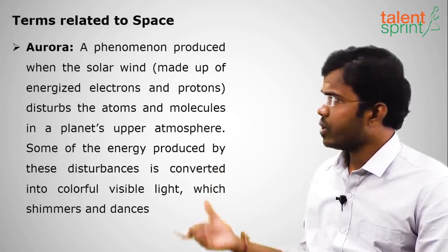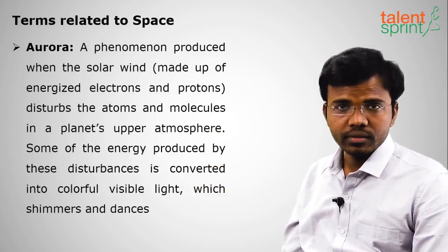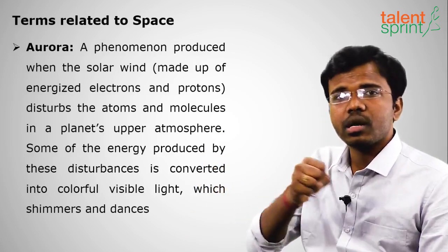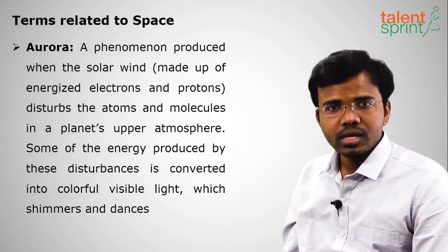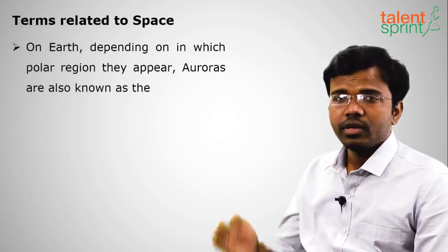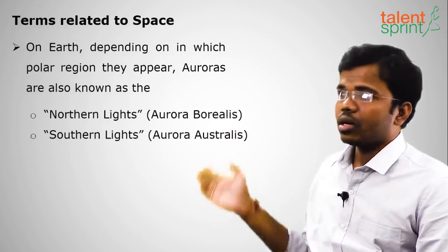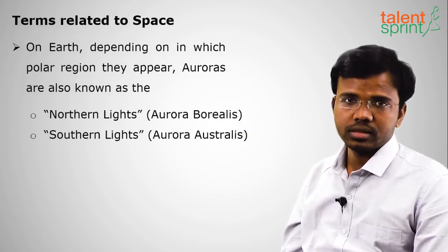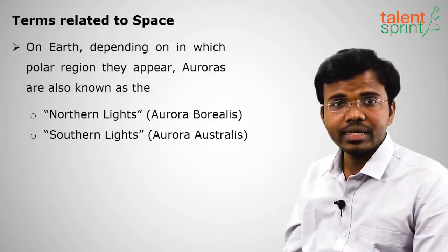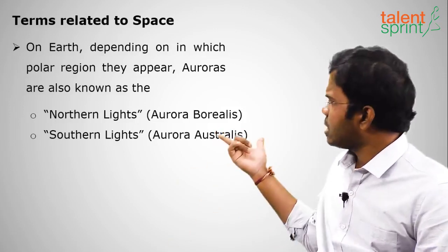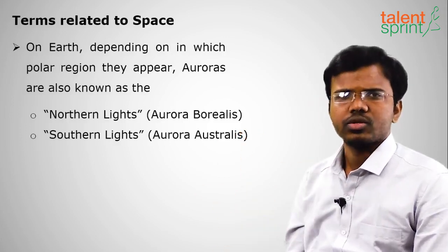First is aurora. Auroras are formed whenever solar wind — the wind coming from the sun — disturbs the atmosphere of a planet. If they appear in the northern hemisphere above the equator, they are called the Northern Lights or Aurora Borealis. If they occur in the southern hemisphere below the equator, they are called the Southern Lights or Aurora Australis. A trick: Australia is in the southern part, so Aurora Australis is southern lights.